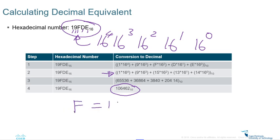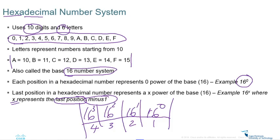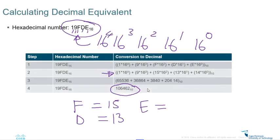The letter F is 15. Recall the sequence: A, B, C, D, E, F — so if E is 14, then D is 13, and F is 15. In the written notation, 1 and 9 remain as-is, but F, D, and E must be replaced with their decimal equivalents: 15, 13, and 14 respectively.